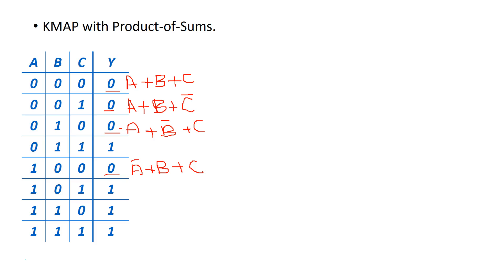Now let's go to the K-map. Here's the same Karnaugh map as before — no changes. Now we're searching for zeros and we'll try to create the largest grouping of zeros. The same rules apply as when we were searching for the largest grouping of ones, except now we search for the largest grouping of zeros. The largest group of zeros I find is actually just two zeros.